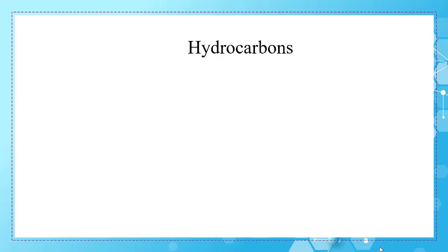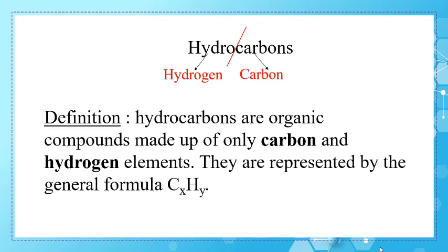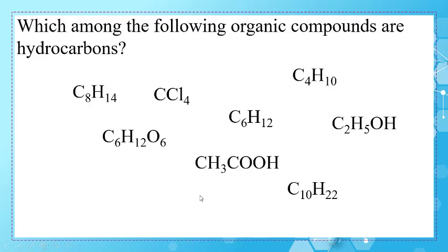The name 'hydrocarbons' can be divided into two parts: the first part is 'hydro' which means hydrogen, and the second part is 'carbons' which means carbon. So the definition of hydrocarbons: hydrocarbons are organic compounds made up only of carbon and hydrogen elements. They are represented by the general formula CₓHᵧ.